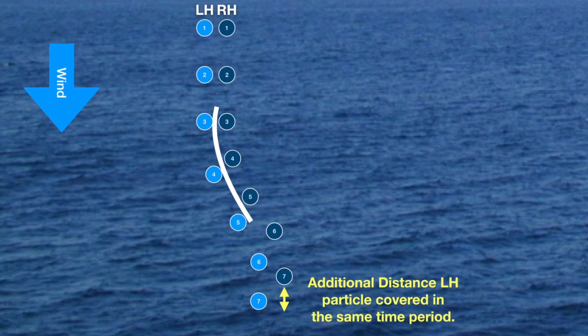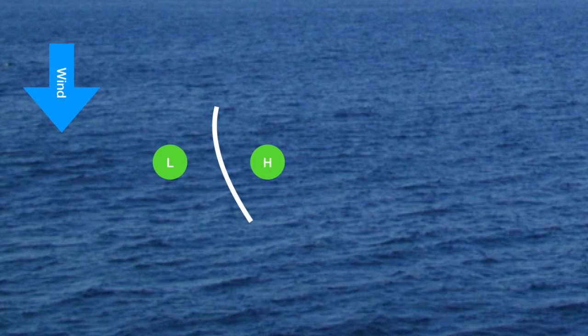The difference in the speed of the particles creates a pressure difference with a high pressure forming on the right hand side of the sail and a low pressure on the left. The speed and pressure differential creates two forces: firstly, a small forward motion, and secondly, a much larger sideways force from air flowing from the high to low pressure.